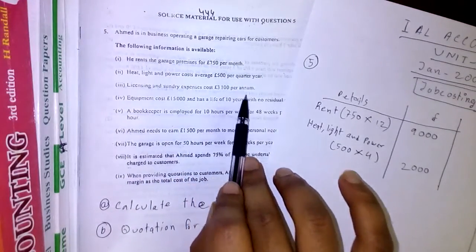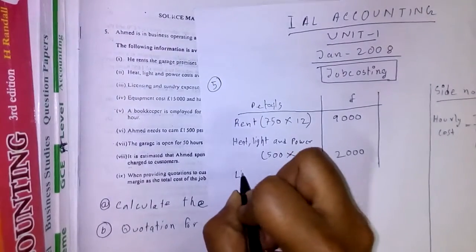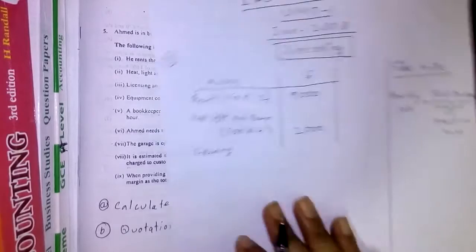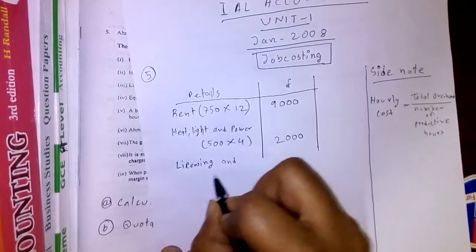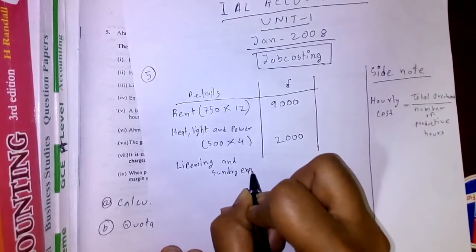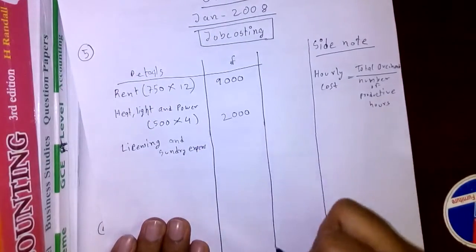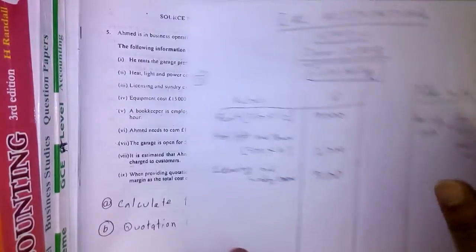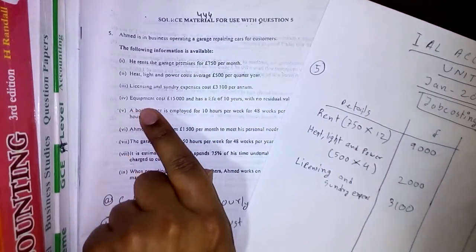Next is licensing and sundry expenses, which cost £3,100 per annum as per the given information.